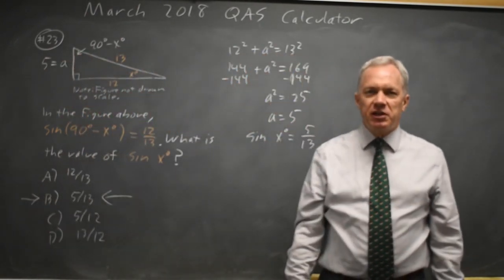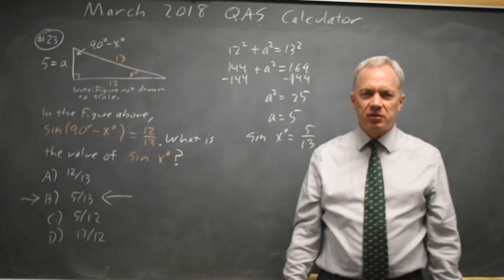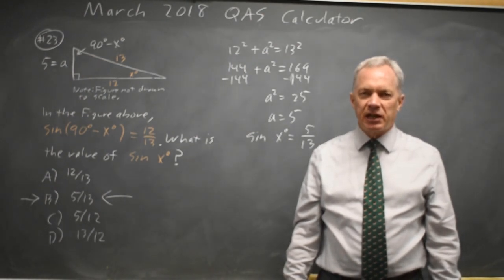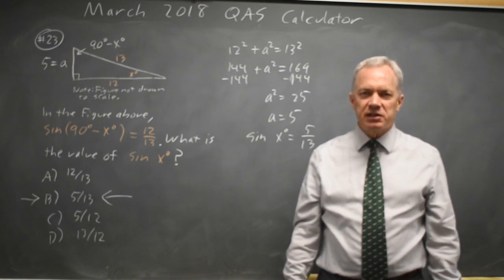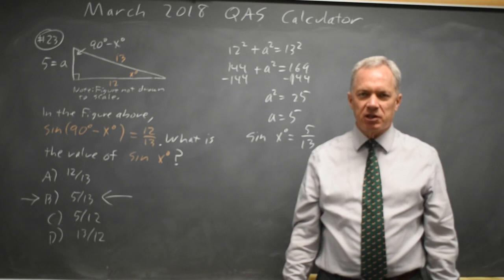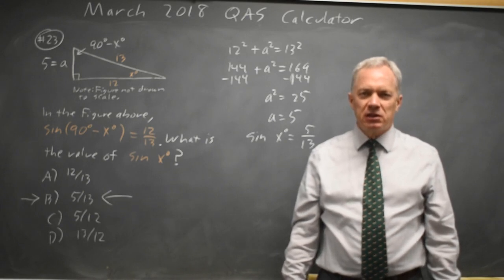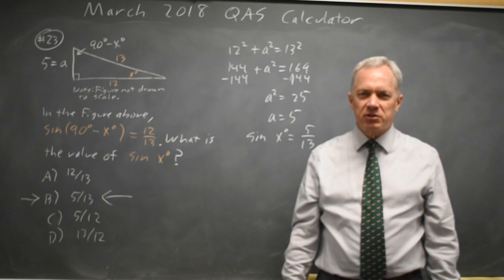College Board often gives you the sine of a complement and asks you to find either the sine or cosine of the angle you've taken the complement of, so make sure that you can work through this and draw the triangles and correctly label them, and always check your labels to make sure that you're labeling them as the question describes.